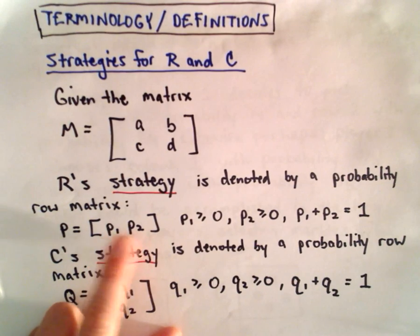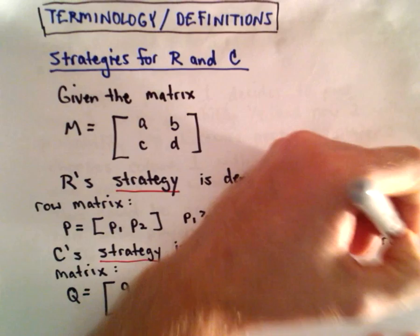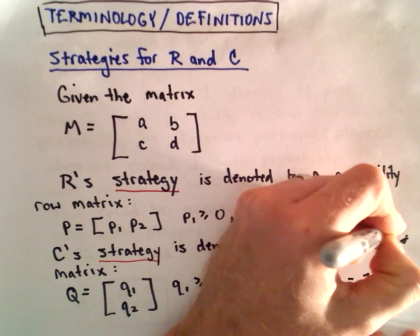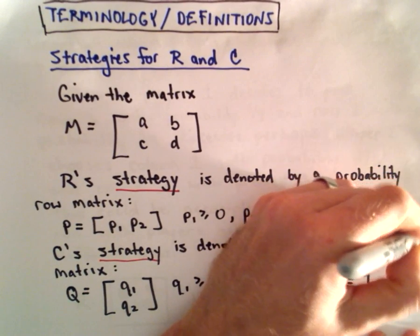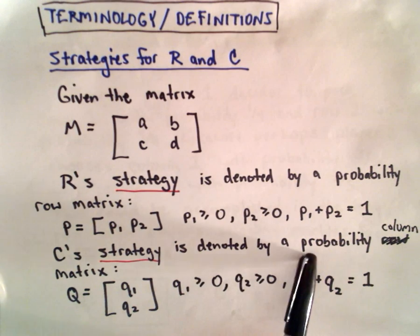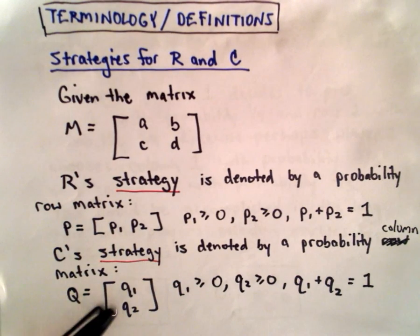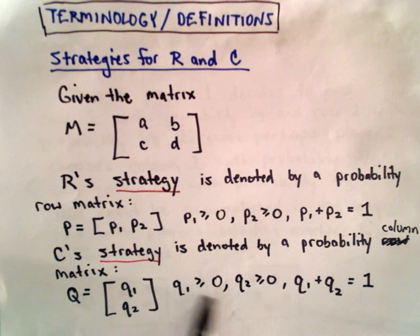C's strategy is going to be denoted by a column matrix. So C's strategy is denoted by a probability column matrix, as you can see here. And that has entries Q1 and Q2. Again, both entries are greater than or equal to zero. And if we add them together, we get one.